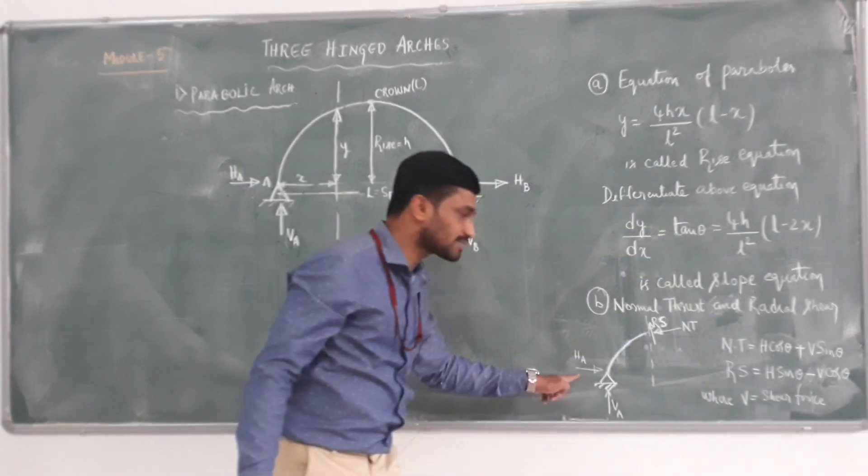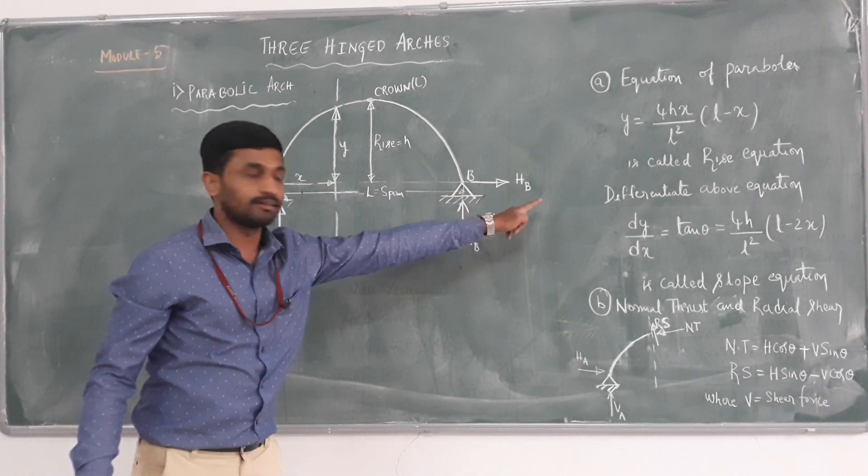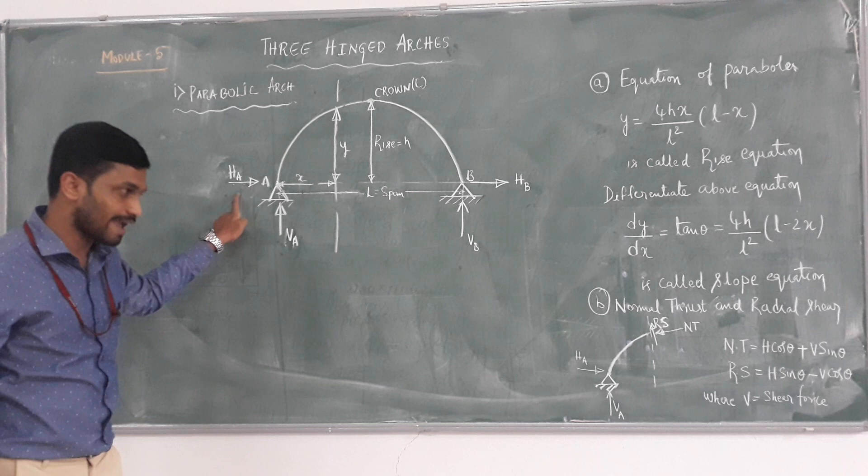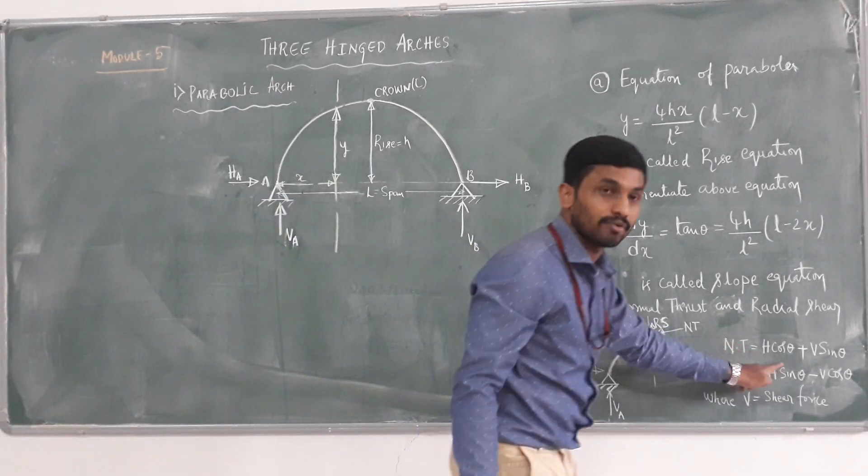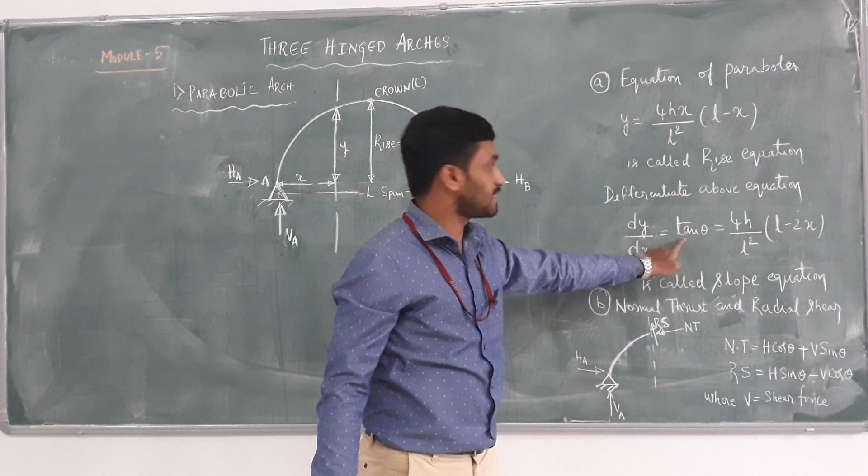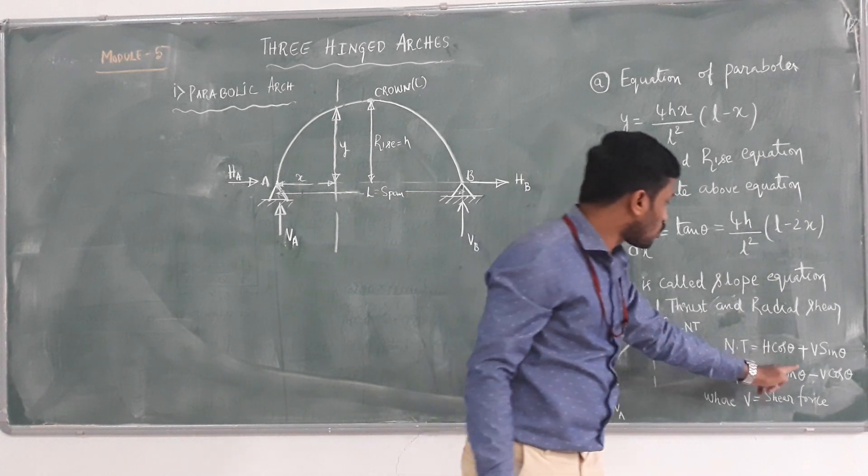Where H is the horizontal force. If it is a symmetrical parabolic arch, then both H values are same: HA equals HB equals H. Therefore H is same. Theta we can determine using this differential equation. We are getting tan theta value. Theta we can easily get it from this equation.